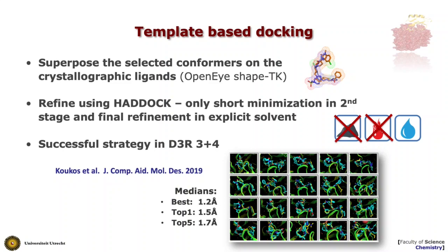In the template-based docking protocol used in D3R rounds 3 and 4, we skip the rigid body docking and flexible interface refinement stages. Instead, we superimpose selected conformers onto the crystallographic ligand in the chosen receptor using OpenEye ShapeTK, and only run the final water refinement stage of HADDOCK. This was a very successful strategy: for Grand Challenge 4, the median RMSD for the top-1 poses across 20 ligands was 1.5 Å, and the best was 1.2 Å.